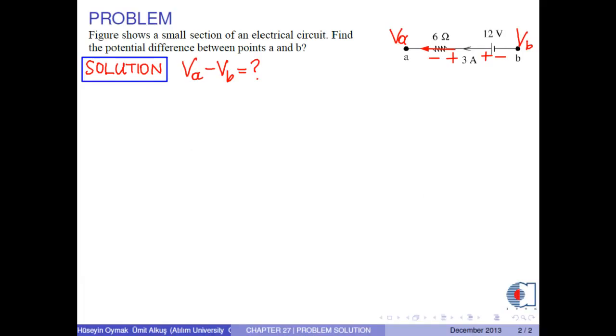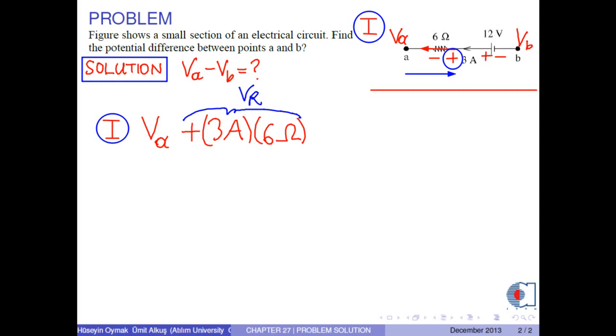The potential at A is Va. And if we go to the right, we take the rightmost sign which is positive for the resistor. Then the potential is calculated as 3 amperes times 6 ohms, which is the potential difference on the resistor if we go to the right. And for the battery, we take the rightmost sign which is negative, therefore we have negative 12 volts. Finally, we reach the potential at point B which is Vb.